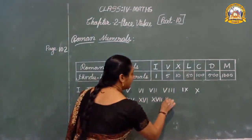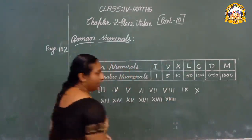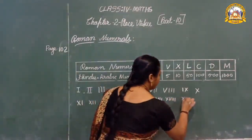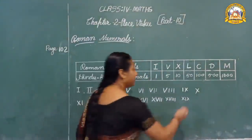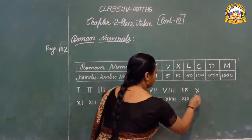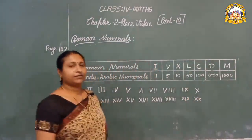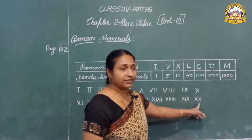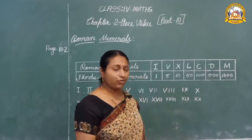Ten plus eight is eighteen — XVIII. Then ten plus nine is nineteen — XIX. And double X represents twenty — XX.